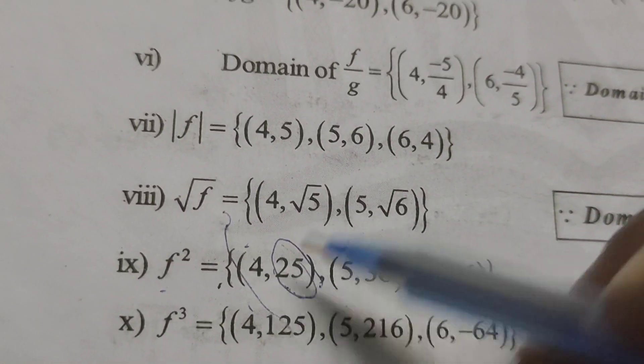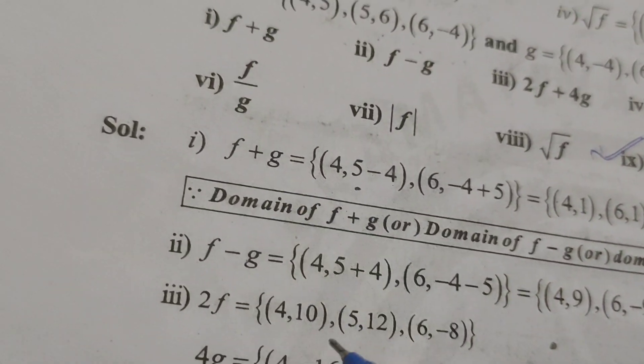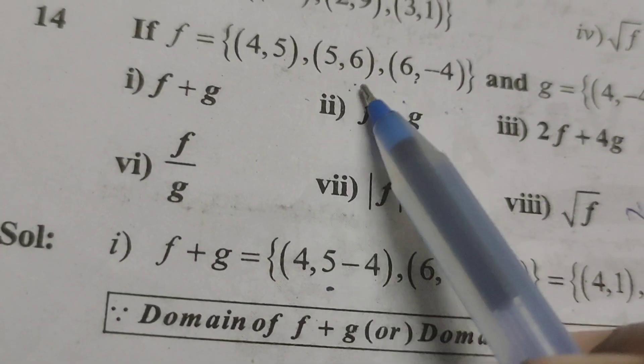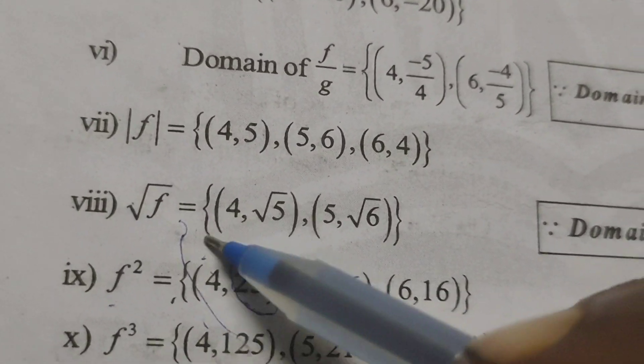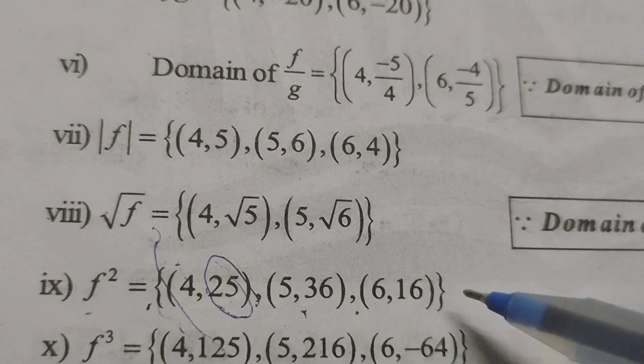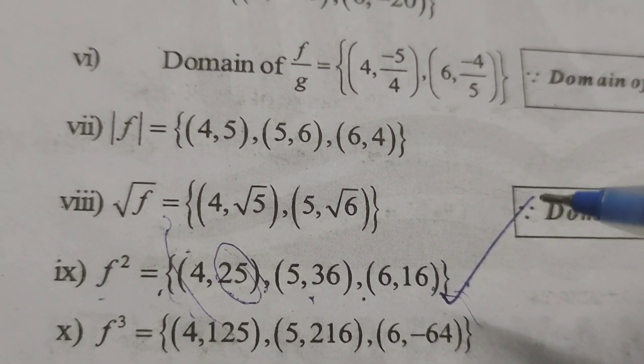(4, 5²) equals (4, 25), next (5, 6²) equals (5, 36), and (6, (-4)²) equals (6, 16). So f squared equals the set {(4,25), (5,36), (6,16)}. Thank you.